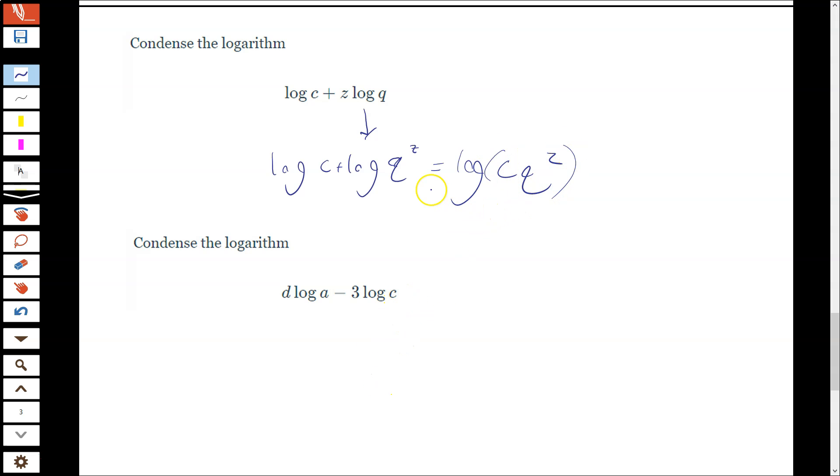Okay, so just like the last ones, just backwards. Here we're going to do the same thing on this one, is we're going to deal with the 3 and the D first. So we're like order of operations. So log A to the D minus log C to the third.